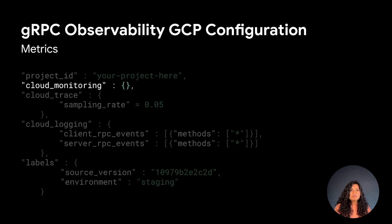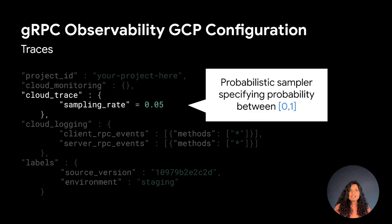To enable monitoring, all you have to do is add the cloud monitoring object. It's that simple. This is what the gRPC observability configuration for traces looks like. As we know, trace data is often produced in large volumes. In order to reduce the overhead, probabilistic sampler configuration is available, which allows you to specify the sampling rate for the trace data. With the value of 0.05, only 5% of calls are randomly selected and will be used to generate trace data.